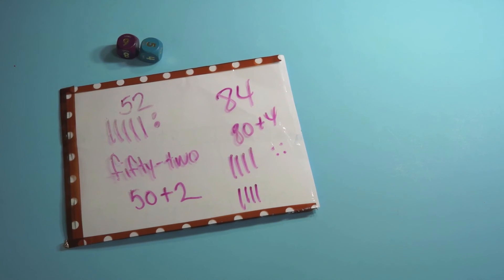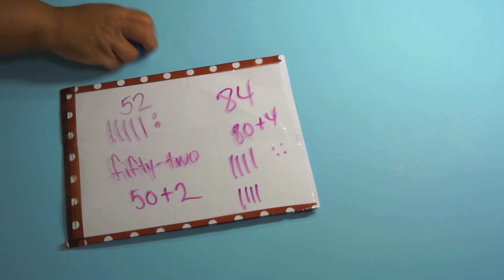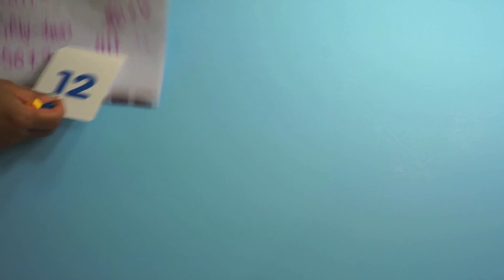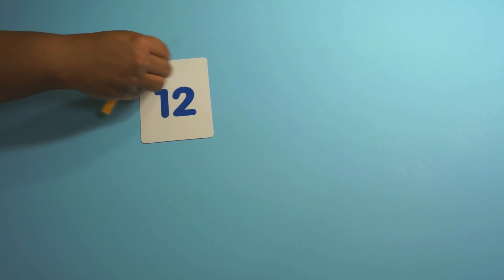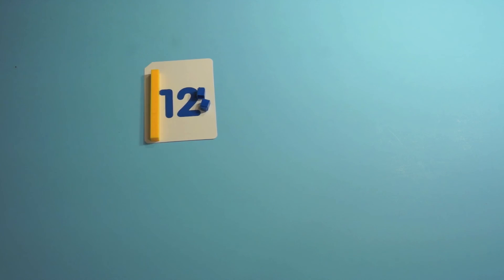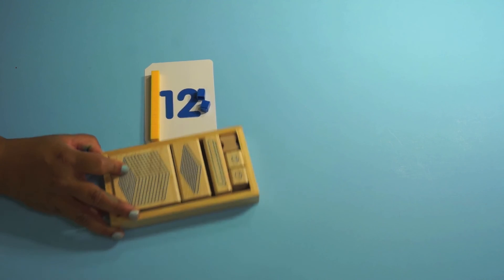And then I also have the kids do things, because remember we're working with tens and ones, so I'll have them pull a number card. I get these number cards at the 99 cent store and then they have to illustrate the number and they're just building the number. Very simple activity but building the number.